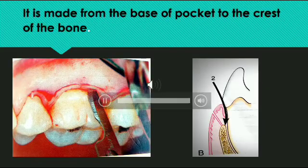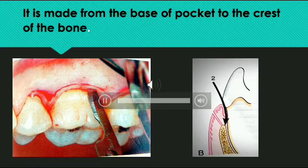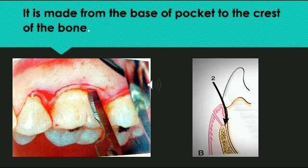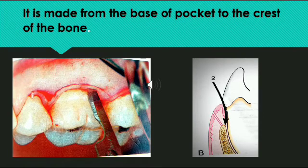The crevicular incision is made from the base of the pocket to the crest of the bone. In the first diagram, the knife is positioned within the gingival sulcus, and in the second diagram you can see that the knife is pointed at the crest of the bone while remaining in the gingival sulcus.